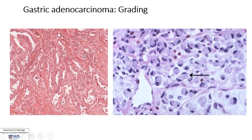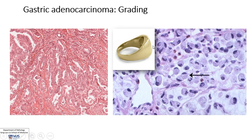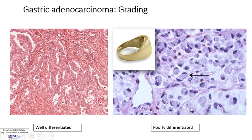Instead, we see single cells where the nucleus is pushed to the side because the cell is full of mucin. Glandular cells can either form glands and produce mucin, or if poorly differentiated, they can still produce some mucin. These cells are called signet ring cells. In the Lauren classification, this would be diffuse type gastric adenocarcinoma or signet ring cell type adenocarcinoma, whereas the well-differentiated gland-forming tumor would be intestinal type.